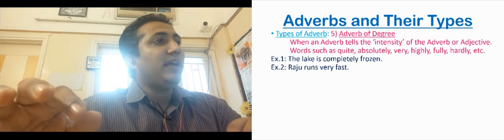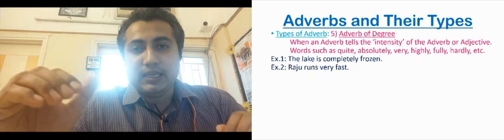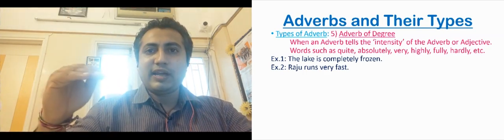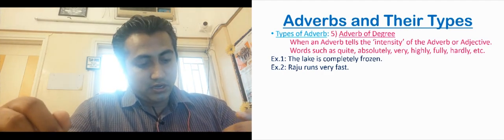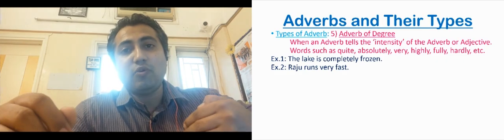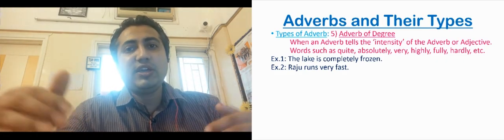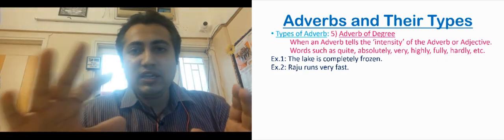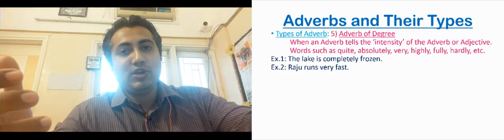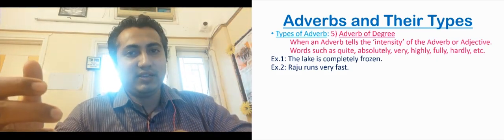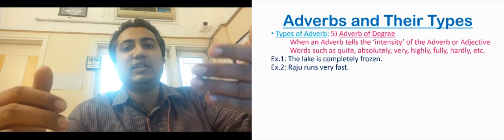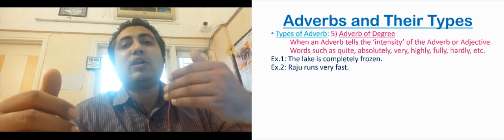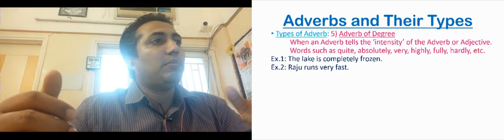Now let us go to the next type — adverb of degree. Adverb of degree tells how much of an adjective or adverb is present — the intensity. For example: The tea is very hot. Tea is hot, but how much? Very hot. So very is adverb of degree. How much intensity does that adjective or adverb carry — that is adverb of degree.